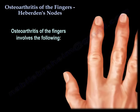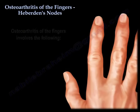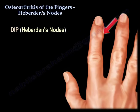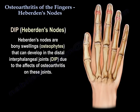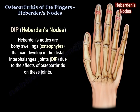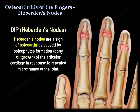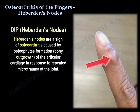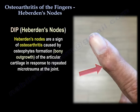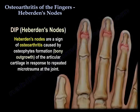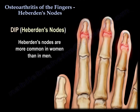Osteoarthritis of the fingers involves the following. At the DIP, Heberden's nodes — these are bony swellings, osteophytes, that can develop in the distal interphalangeal joints due to the effects of osteoarthritis. Heberden's nodes are a sign of osteoarthritis caused by osteophyte formation, bony outgrowth of the articular cartilage, in response to repeated microtrauma at that joint. Heberden's nodes are more common in women than in men.